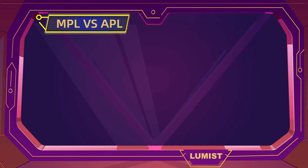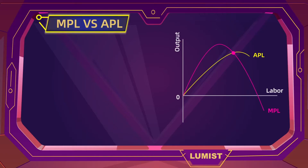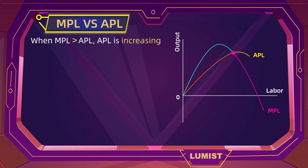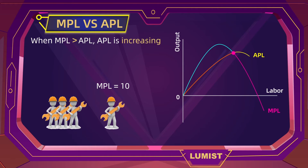Now let's compare marginal product to average product. Average product increases as long as marginal product is greater than it. For example, if our next unit of labor increases total product by 10 and the current average product of labor is only 8, then average product will increase with that unit of labor because that next worker is more productive than our average worker right now.